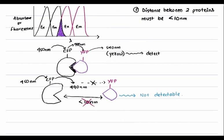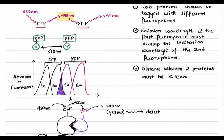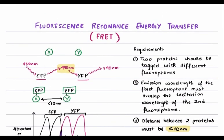There you have it — the basic concept of FRET. One fluorophore should have an emission spectrum equal to the excitation spectrum of another, so that resonance can occur. Additionally, the two proteins or molecules should not be more than 10 nanometers apart for the resonance energy transfer to occur. That is the basic concept of fluorescence resonance energy transfer.